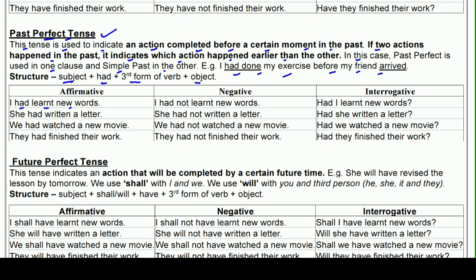जैसे: I had learnt new words — मैं नए words सीख चुका था। I had not learnt new words। Had I learnt new words? — क्या मैं नए words सीख चुका था? She had written a letter। She had not written a letter। Had she written a letter? We had watched a new movie। We had not watched a new movie। Had we watched a new movie?